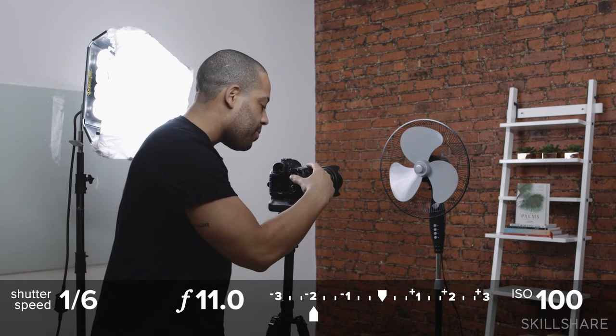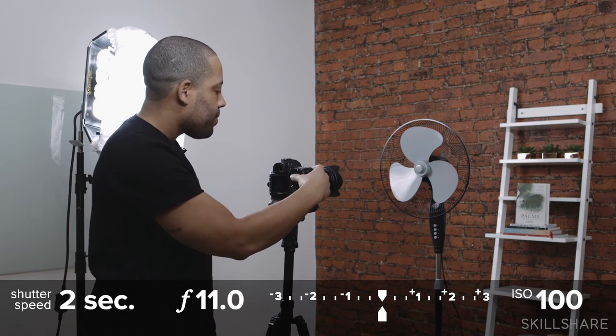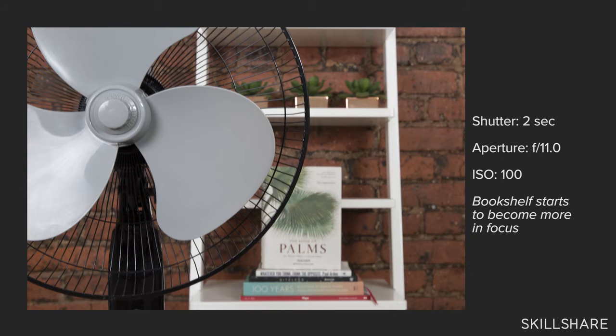At f/11, we have to shoot at about two seconds of exposure. Don't ever try to do this handheld — you'll need a sturdy tripod. This is my travel tripod, probably better to have a more sturdy one, but it'll do for this experiment. Shooting the image at f/11 — the fan blades are still crisp and sharp. But you start to see in the background, there's a book called The Book of Palms, and you can start to see a little more sharpness — you can actually read the title.